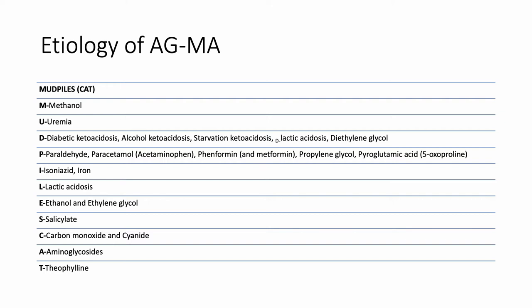M is for methanol, U for uremia, D for diabetic ketoacidosis, alcohol ketoacidosis, starvation ketoacidosis, D-lactic acidosis, and diethylene glycol. P is for paraaldehyde, paracetamol or acetaminophen, phenformin or metformin, propylene glycol, and pyroglutamic acid or 5-oxoproline. I is for isoniazid and iron. L is for lactic acidosis. E is for ethanol and ethylene glycol. S is for salicylate, C for carbon monoxide and cyanide, A for aminoglycosides, and T for theophylline.